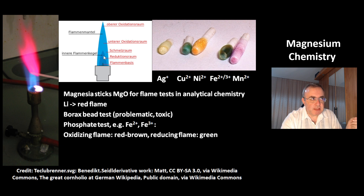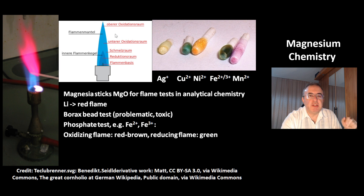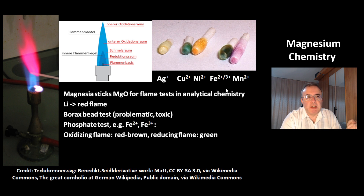In the middle picture you can see different zones of the flame. At the bottom, the dark blue zone is the reduction zone, and at the top that's the oxidation zone. You can use both these tests to check for, for example, iron ions.